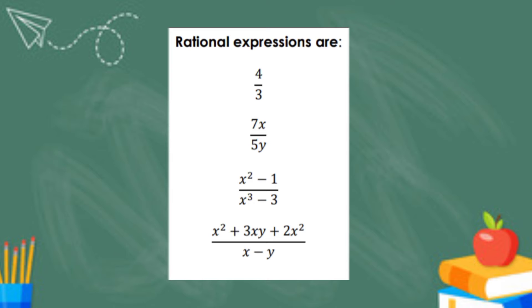Next example, 7x over 5y. The P is equal to 7x, and the Q is equal to 5y.